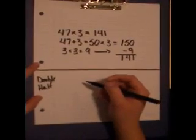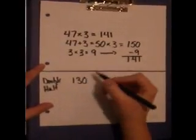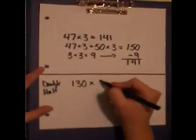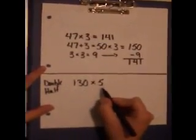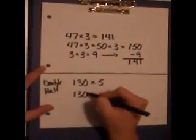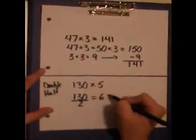An example of this strategy is 130 multiplied by 5. To make this equation easier, I can split 130 in half. This gives me 65.